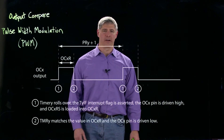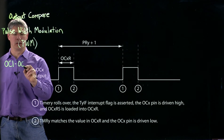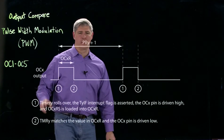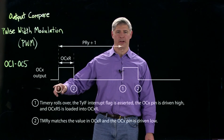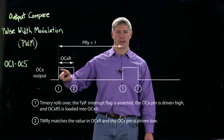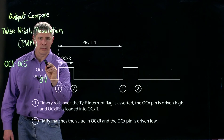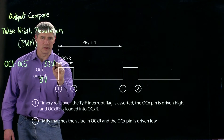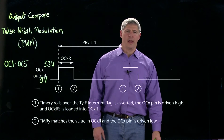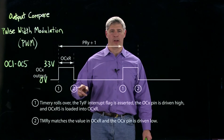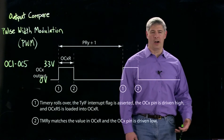There are five output compares on the PIC32, labeled OC1 to OC5. Here we're looking at OCX, where X is equal to 1 to 5, and it's creating an output pulse train that pulses from 0 volts up to 3.3 volts. The transitions here are at time 1 and time 2.